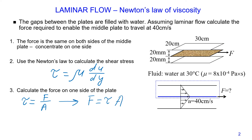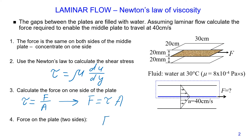The surface area of the middle plate on one side is 20 centimeters multiplied by 30 centimeters. Since the force acts on two sides, the total force F_total equals 2 multiplied by F, where F is the force on one side of the middle plate.